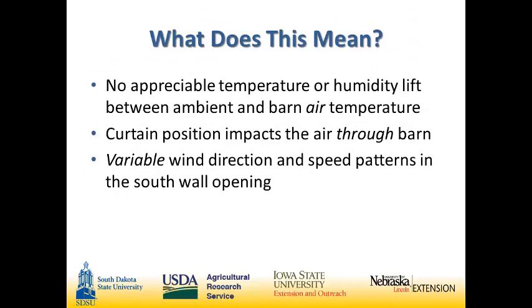What does this mean for somebody managing cattle in a monoslope barn? It's a naturally ventilated barn — it behaves like a naturally ventilated barn. Not a lot of difference between air temperatures and relative humidity inside and outside. But again, it doesn't necessarily reflect exactly what the cattle feel. Curtain position really impacts airflow through the barn — it's a very powerful tool for producers. And there's a lot of variable wind speed and direction at that south wall.